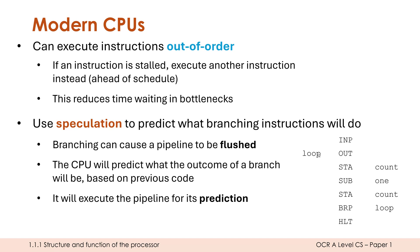It can seem like you're guessing, but actually a lot of programs are quite predictable. A loop, for example, that counts down by five — counting down five, four, three, two, one — is quite predictable. The CPU can learn that pattern and apply it in its speculation, so that most CPUs get this right up to around 95% of the time.